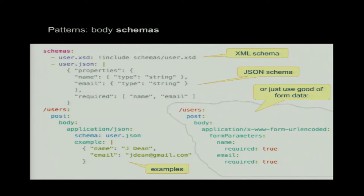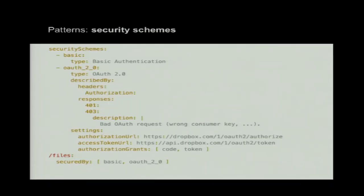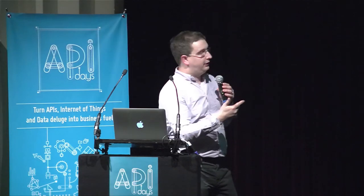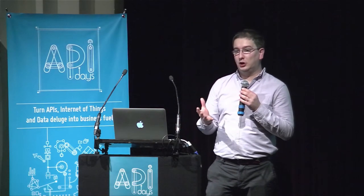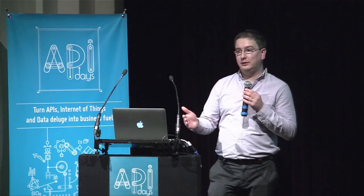Schemas can be JSON schema or XML schema, embedded or externalized, and you can also include examples. There's also the option of using form parameters if you want to use those rather than a body. For security, there are built-in security schemas for basic authentication and OAuth. These security traits can be applied to specific resources, which will pass through the correct authorization headers, define response codes, and are also used by the generated console to allow you to authenticate with OAuth to interact with the API.